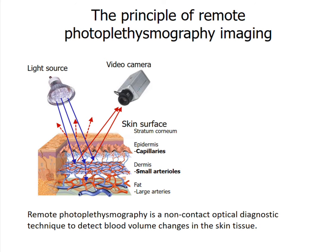First of all, I would like to explain the principle of remote photoplethysmography technique. Remote photoplethysmography is a non-contact optical diagnostic technique to detect blood volume changes in the skin tissue. The rPPG technique requires a visible or near-infrared light source and video camera. Light penetrates into the skin, where it reaches small blood vessels and is partly absorbed in the blood. Due to cardiac activity, blood volume changes, and this leads to modulation of light intensity in skin tissue. A video camera is able to detect small intensity variations of backscattered illumination.